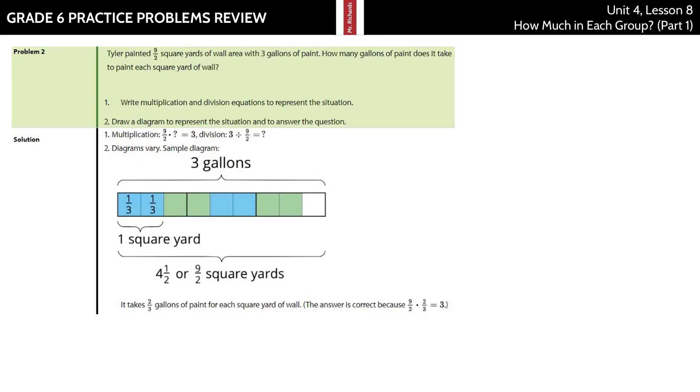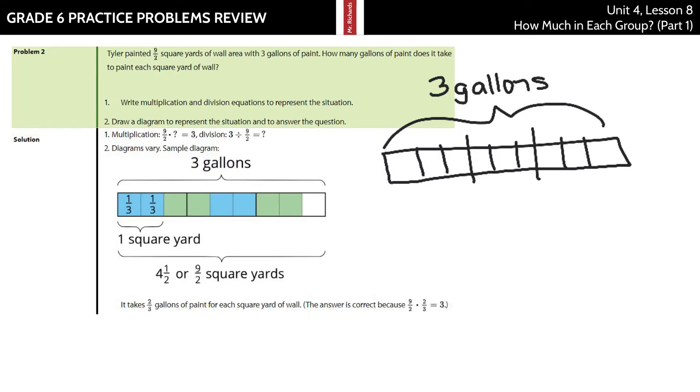Well, I like to work with the diagrams first. So let's draw ourselves our own bar diagram. Now, the entire thing is three gallons. And I painted nine-halves square yards wall area with that. So if I just kind of break this into nine, each of these here, one-half, one-half, one-half, one-half, adds up to the nine-halves.